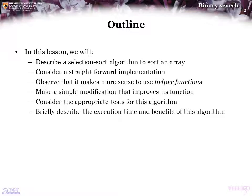In this topic, we will describe the selection sort algorithm to sort an array. We will consider a straightforward implementation of this algorithm in C++. However, we will then observe that it makes more sense to use helper functions to simplify the writing of the code, as the functions themselves take over the additional work. We will then make a simple modification to the implementation that improves its functionality, and we will consider appropriate tests for this implementation. We will then briefly describe the execution time and benefits of this algorithm.